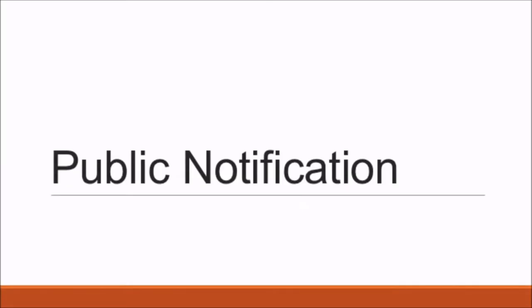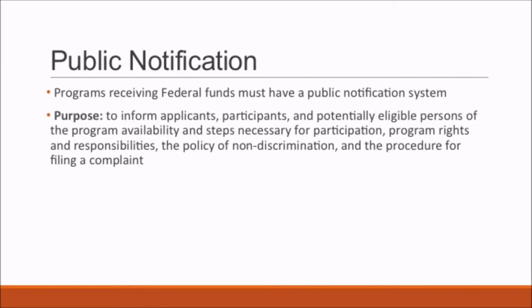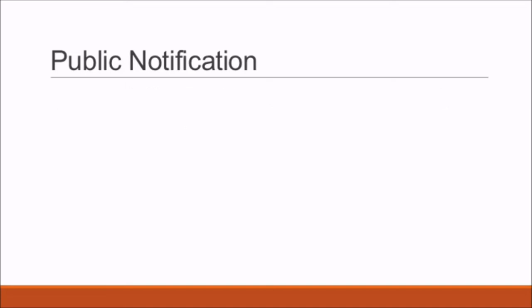Public Notification. All programs receiving federal funds must have a public notification system. The purpose is to inform applicants, participants, and potentially eligible persons of the program availability and steps necessary for participation, program rights and responsibilities, the policy of non-discrimination, and the procedure for filing a complaint.